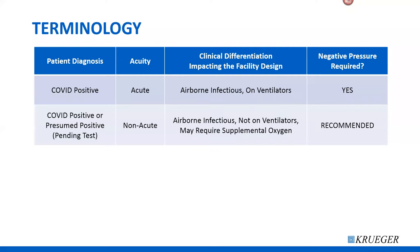Some quick terminology: the definition of acute versus non-acute. For today's presentation, we're focusing on patients diagnosed as acute COVID positive patients. Acute patients are typically put into negative pressure environments, and that's exactly what the reverse flow fan filter unit can help create. A non-acute patient is somebody assumed to be COVID positive but still pending test results, typically housed in an isolation space. ASHRAE and the CDC say for non-acute patients you can simply house them in a room and keep the door closed.